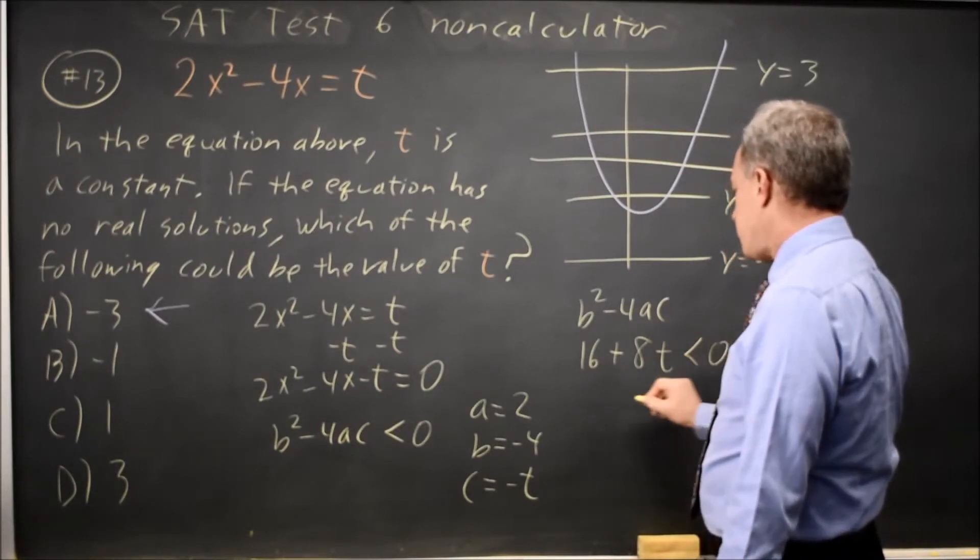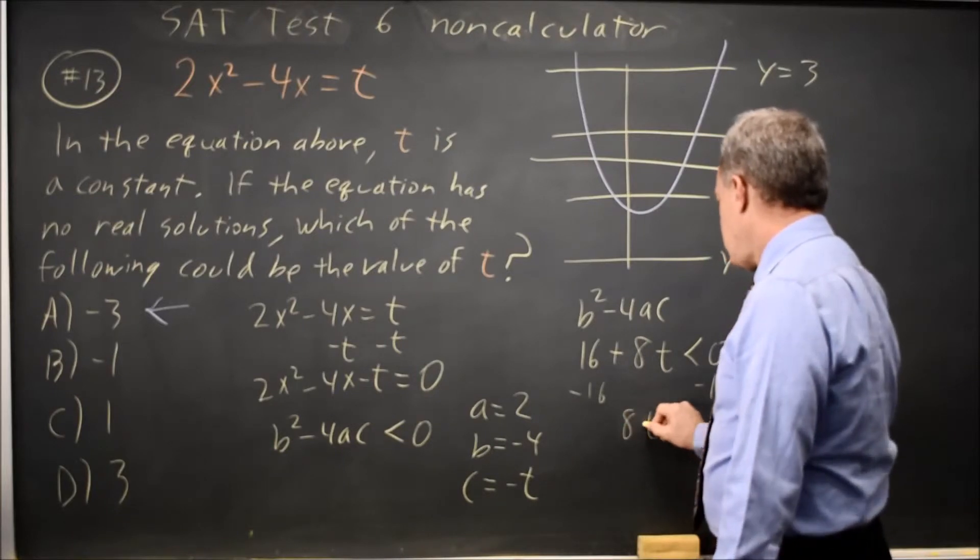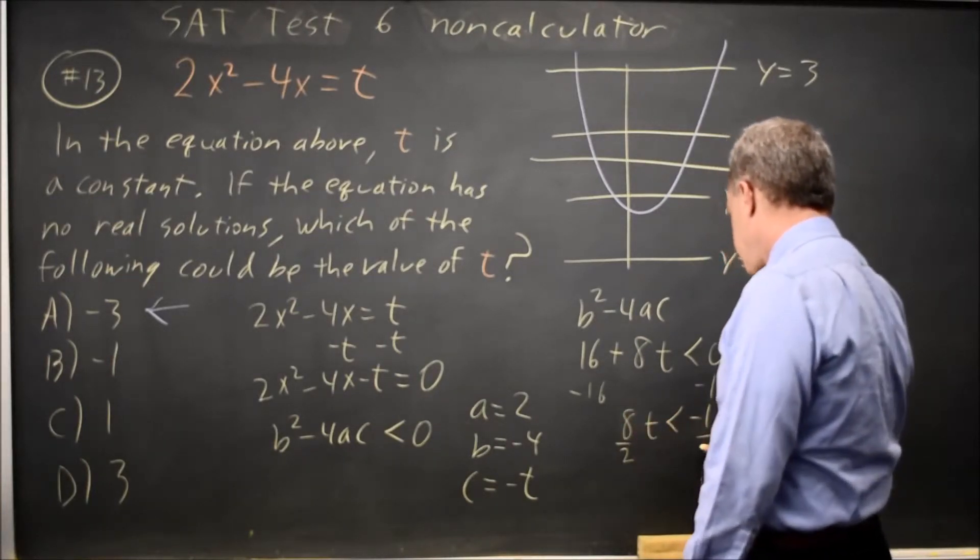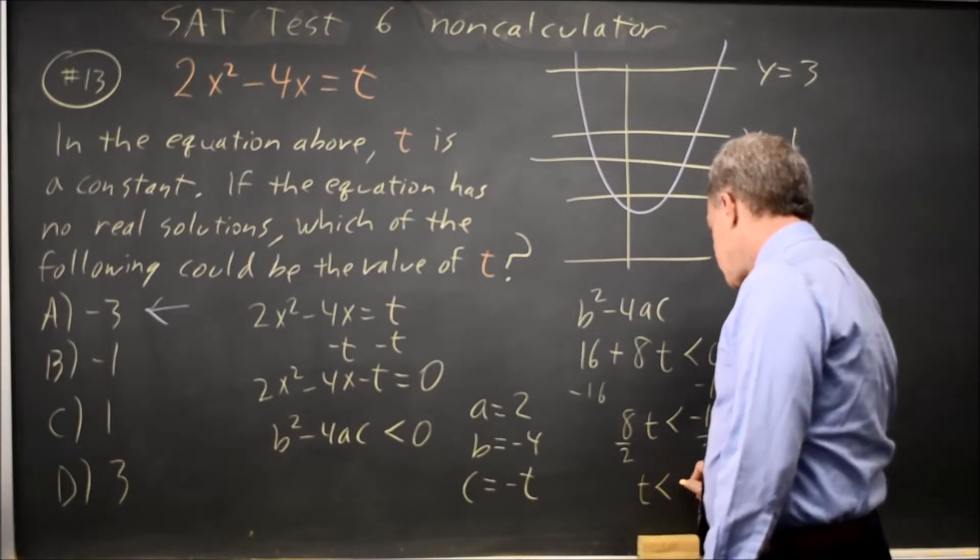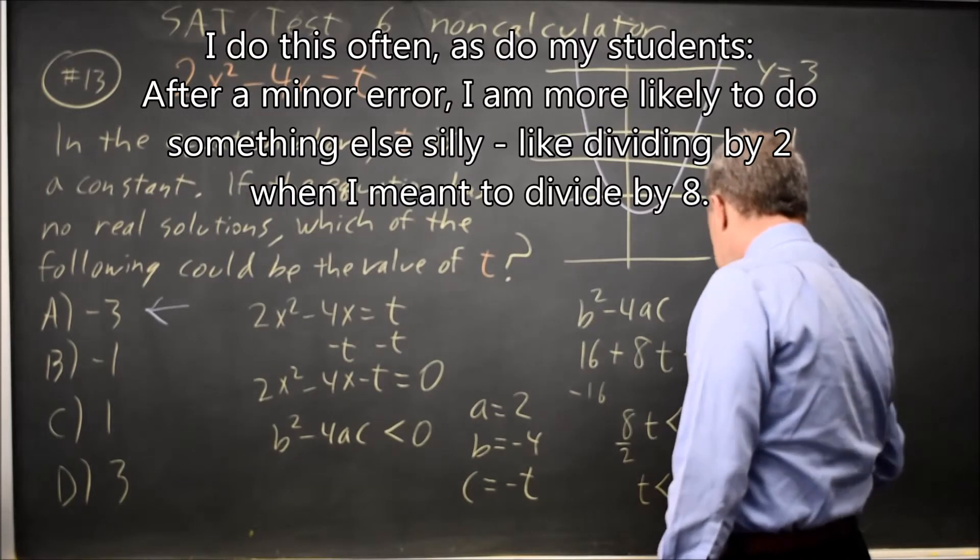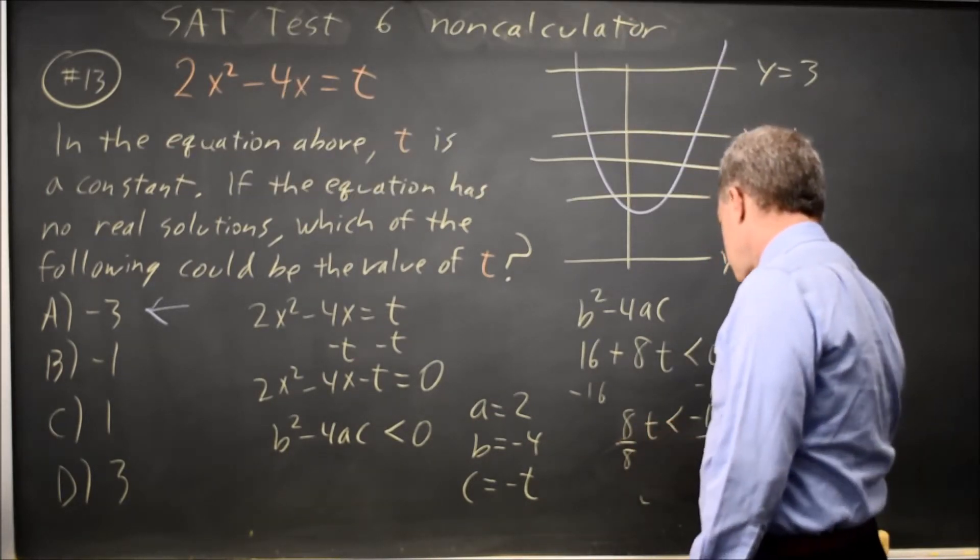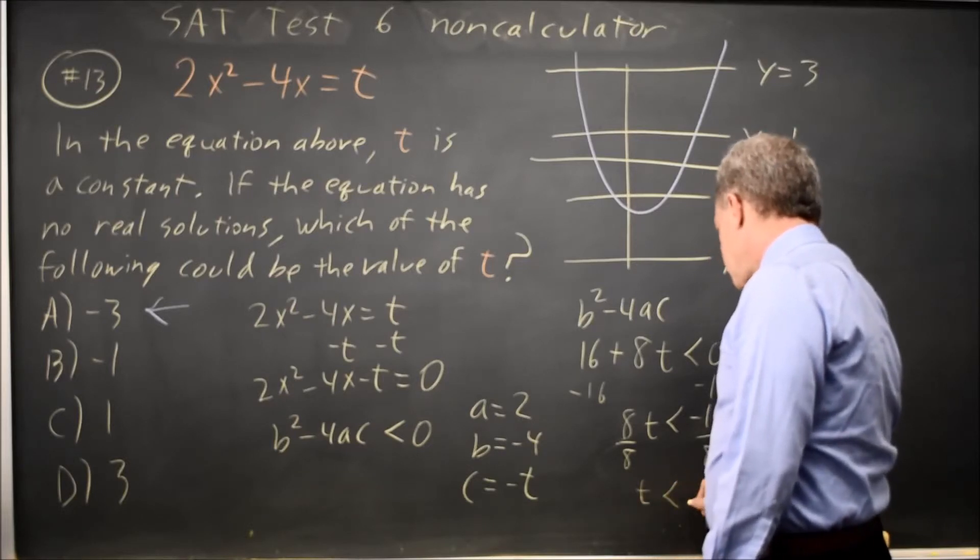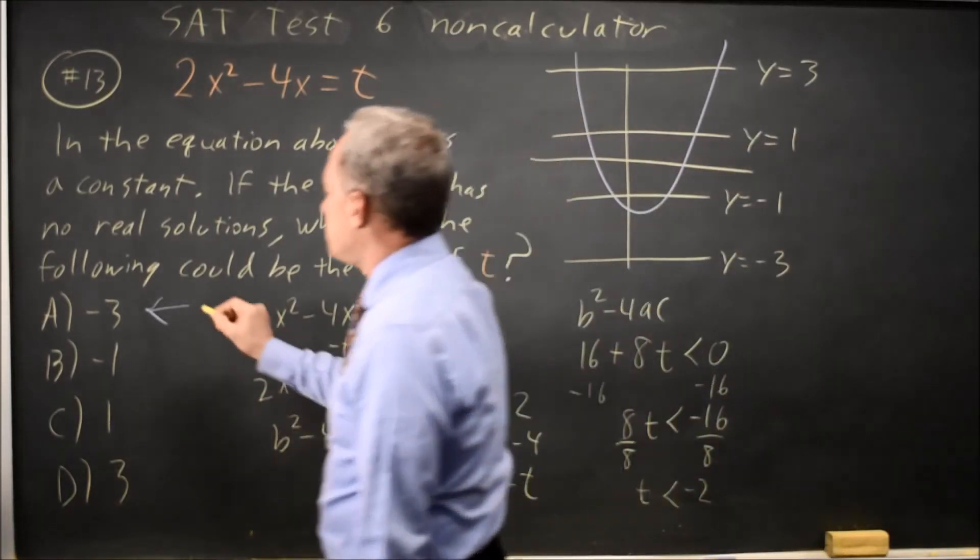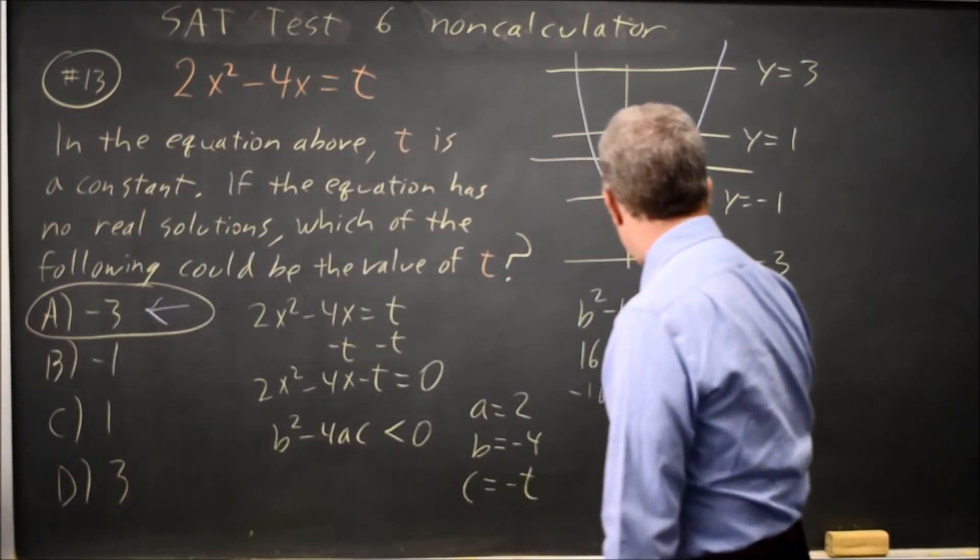And I want that to be less than 0. Subtract 16 from both sides. 8t is less than negative 16. Divide by 2. t is less than negative... divide by 2. The only choice for t that's less than negative 2 would be negative 3. So again, the solution is negative 3.